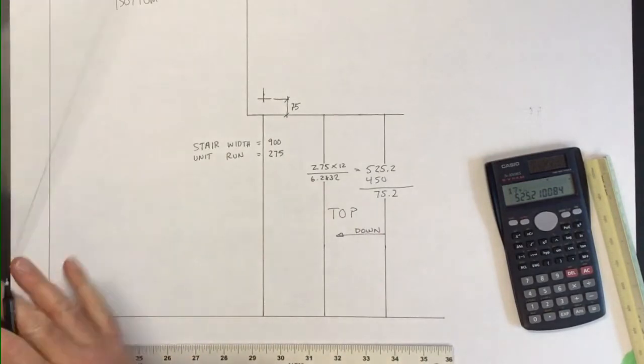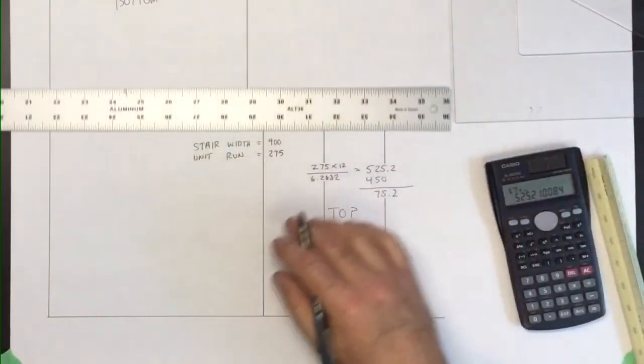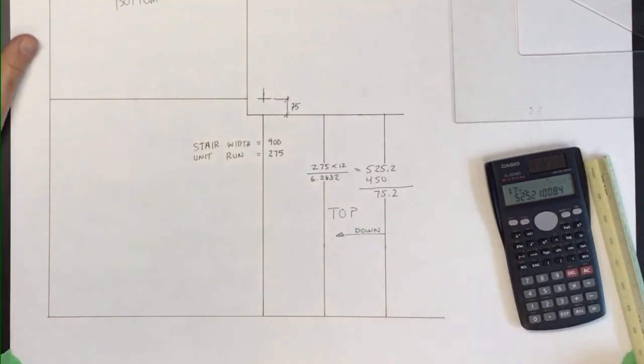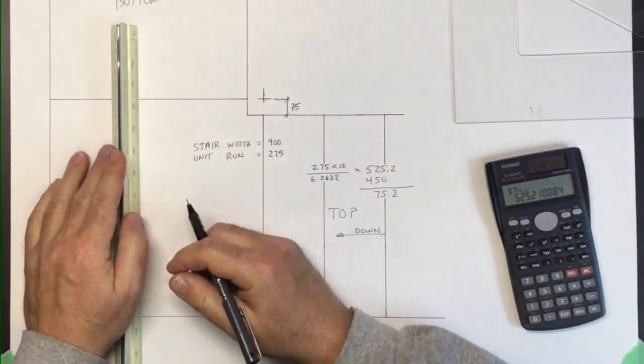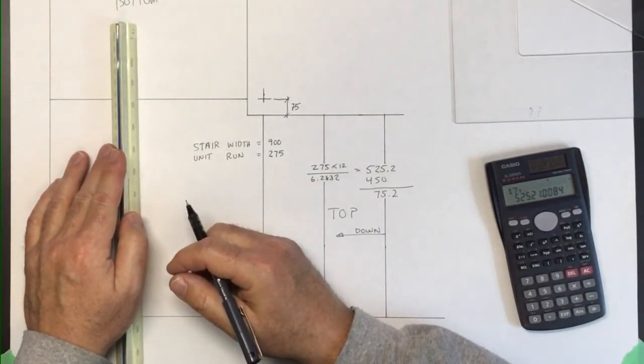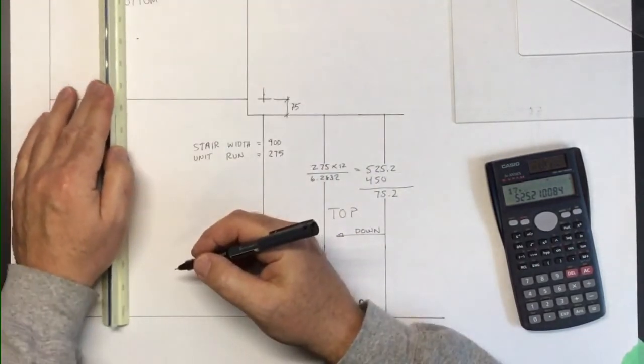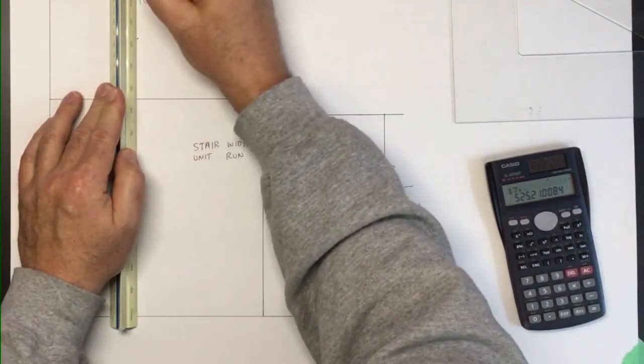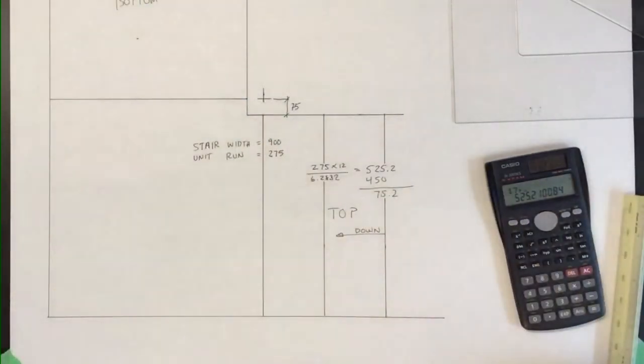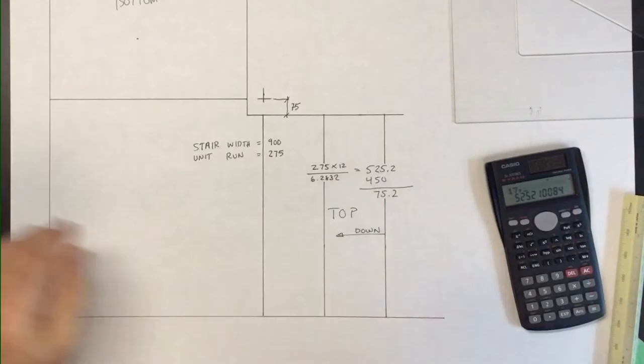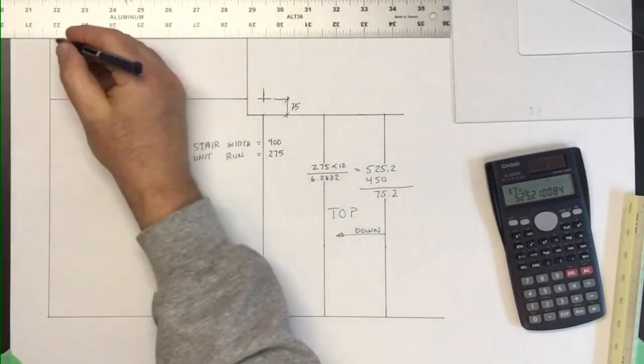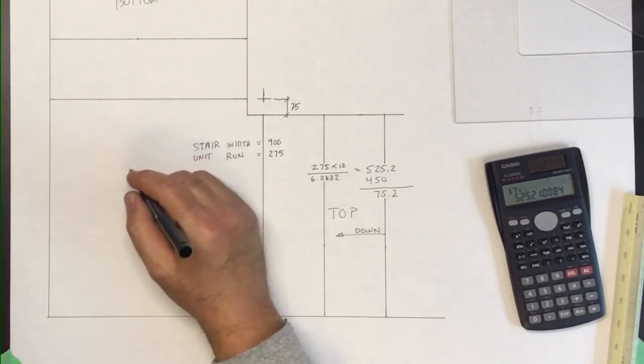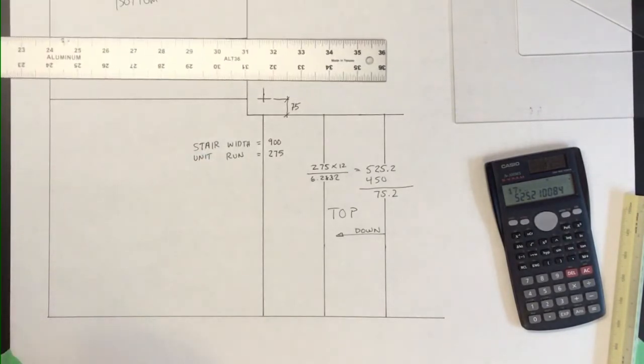And now I can also draw in my other riser headed down this direction, and I'll draw a couple of risers in there at 275. And probably at 1 to 1 you won't have enough room on your paper to draw two of these in, but you might get one of them in.